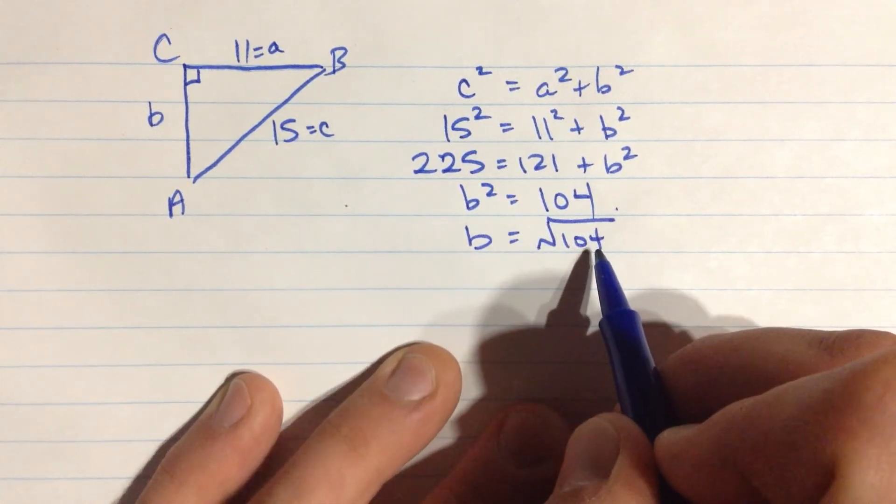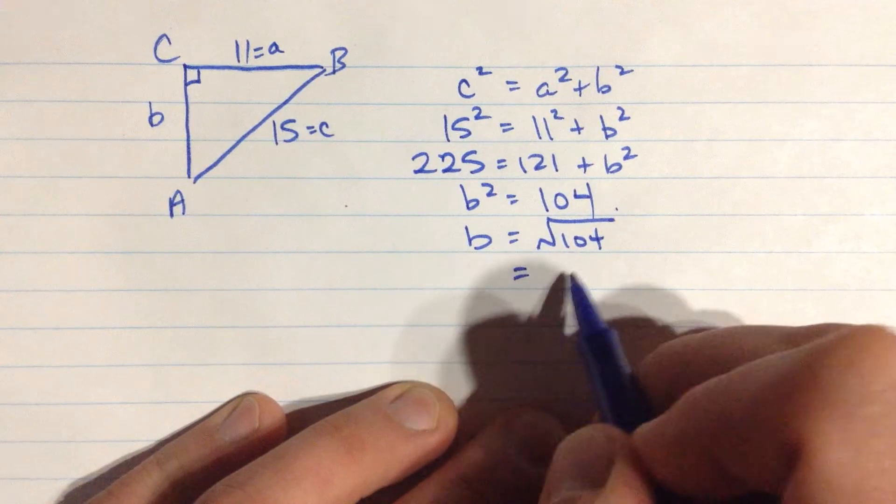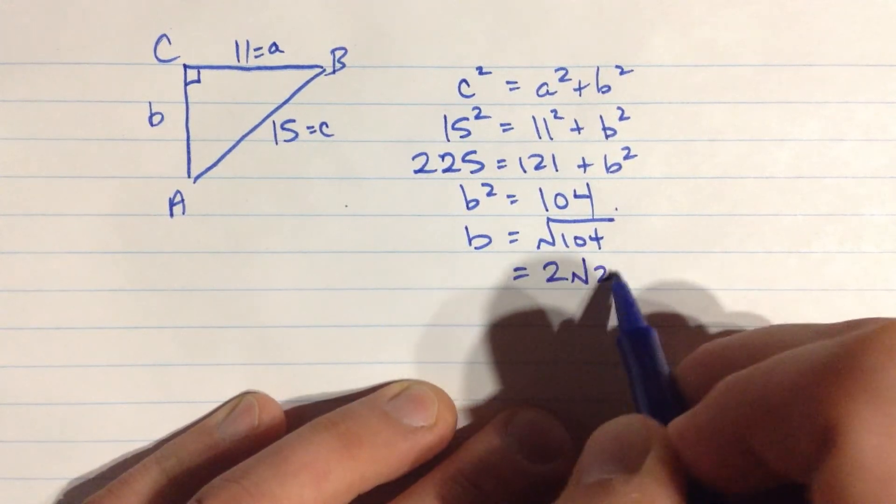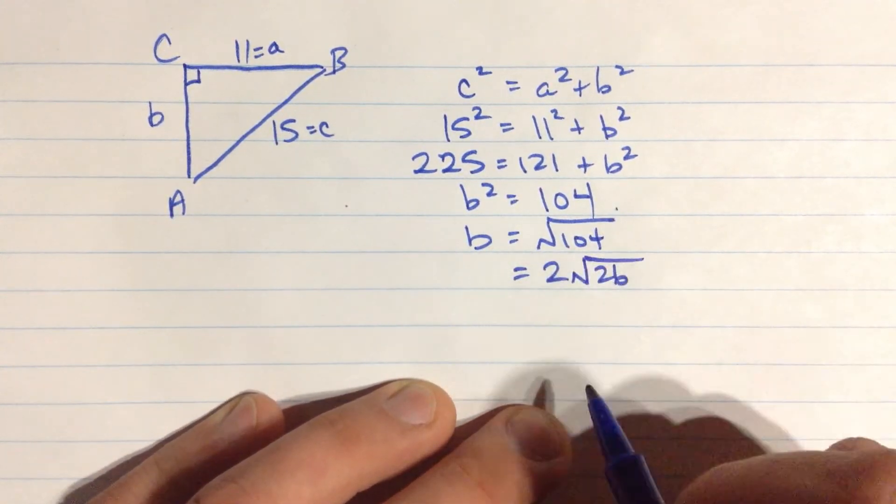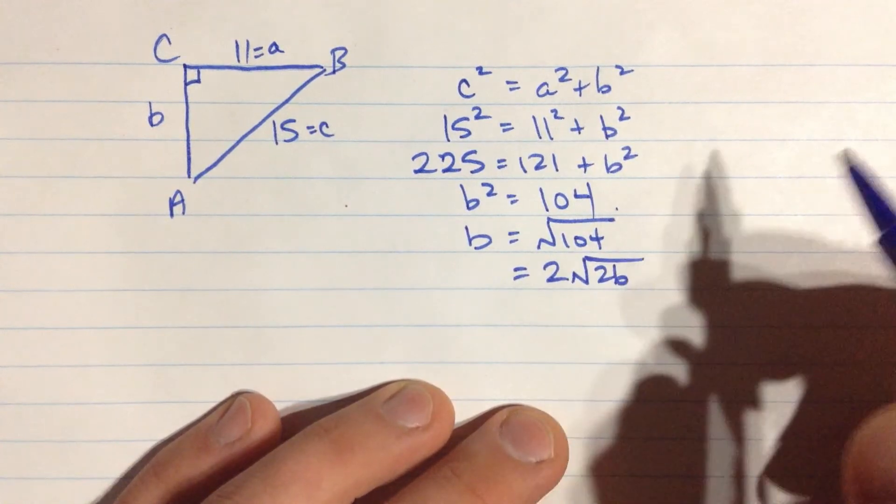Let's see, that's 26 times 4. So that's 2 root 26, I think is the simplest way to write that. And you can convert that to some decimal if you like.